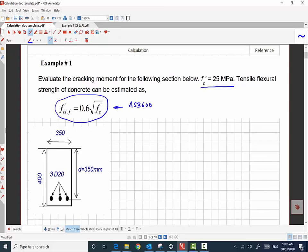The section of the concrete is given here. The width of the beam is 350 millimeter whereas the overall depth of the beam is 400 millimeter. There are three deformed bars of 20 millimeter diameter and effective depth of the beam is 350 millimeter.